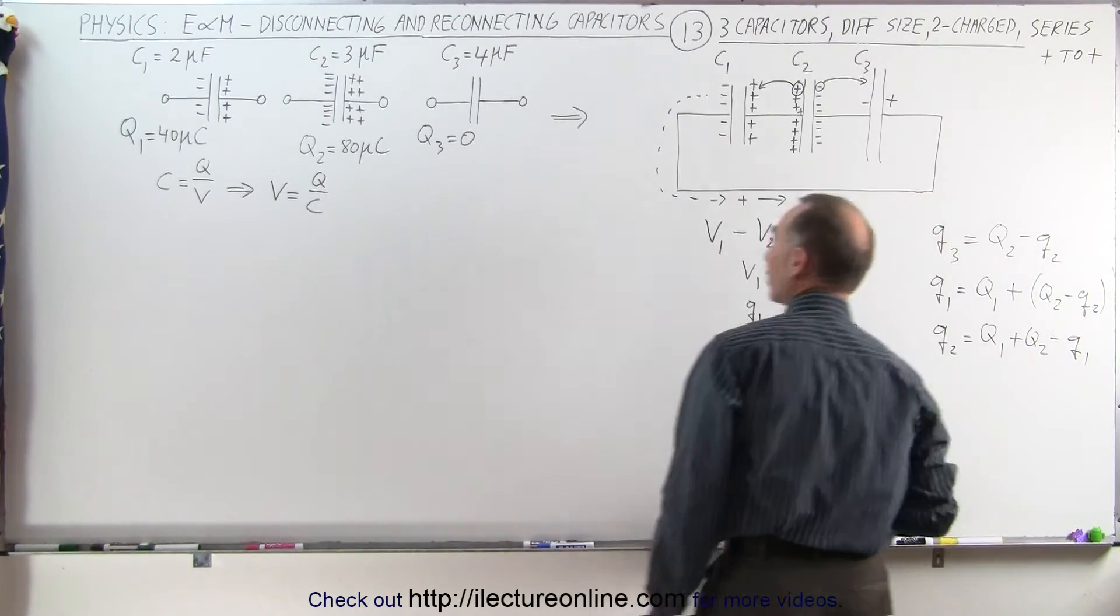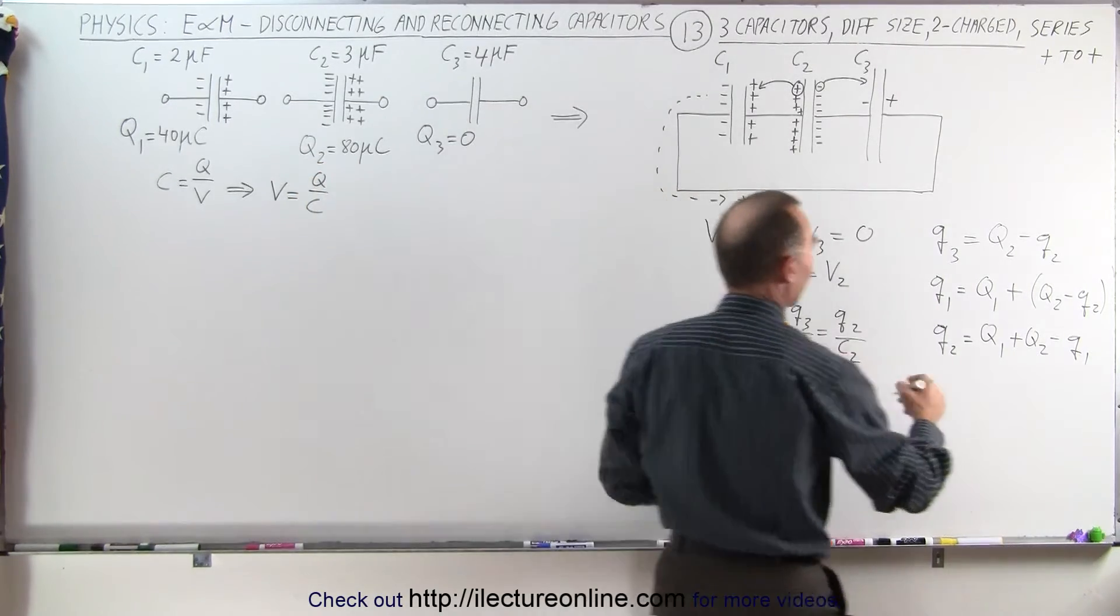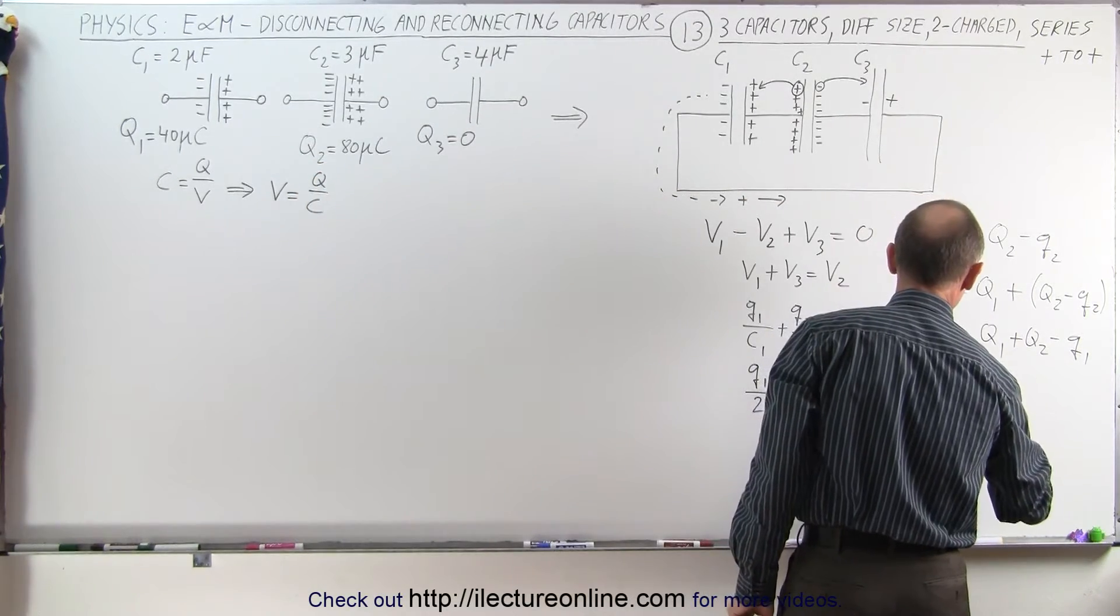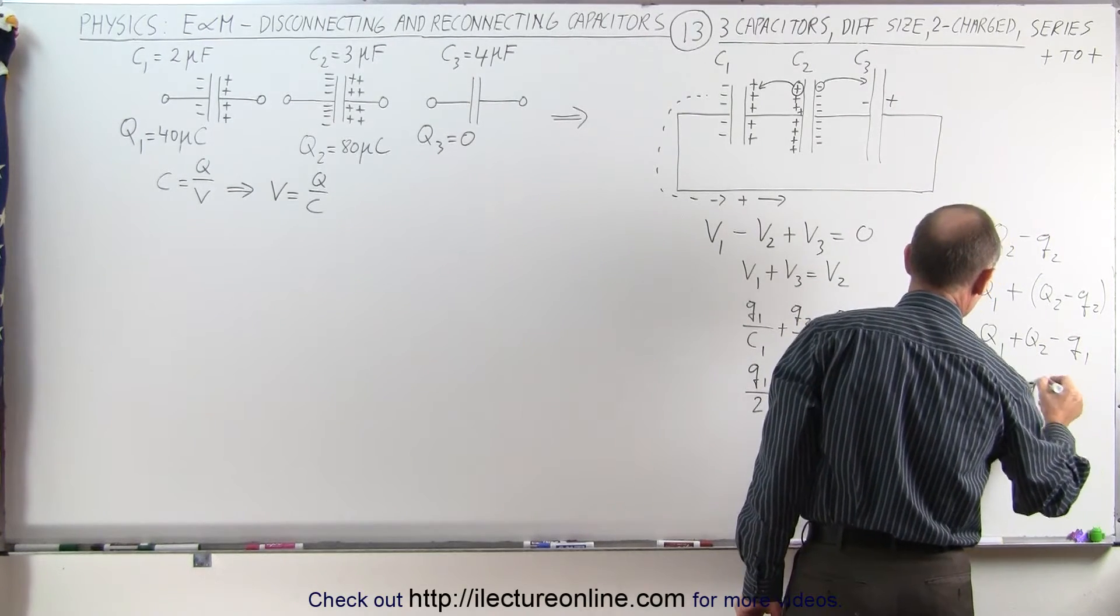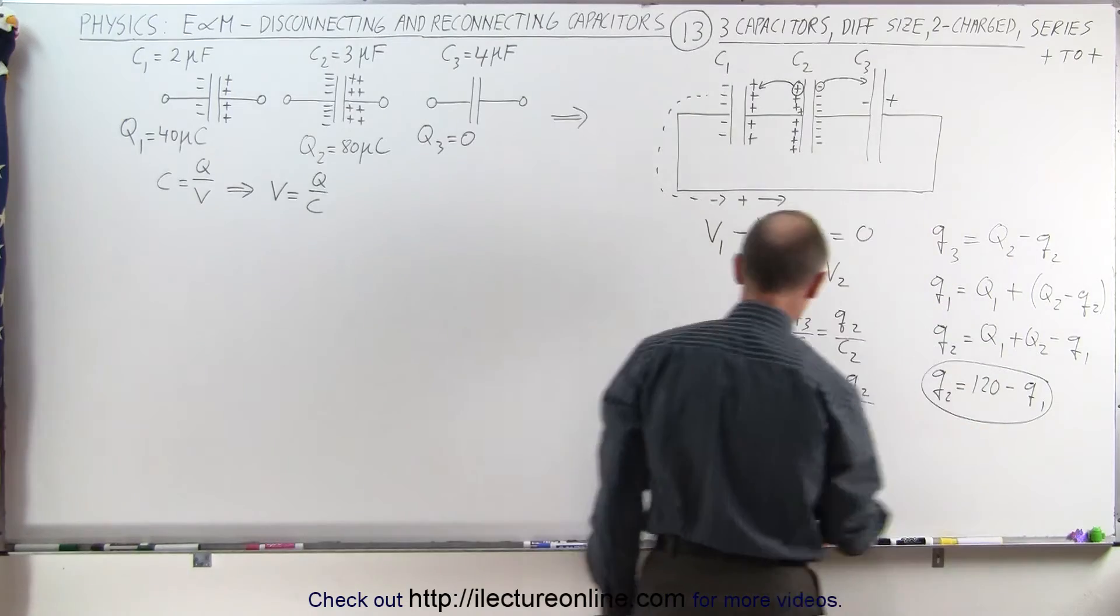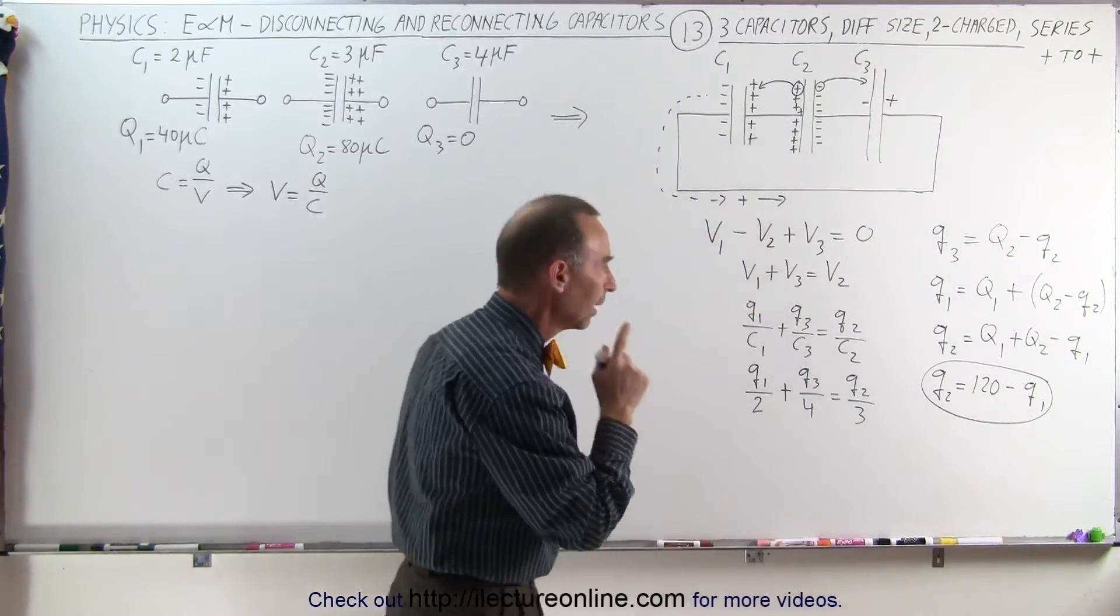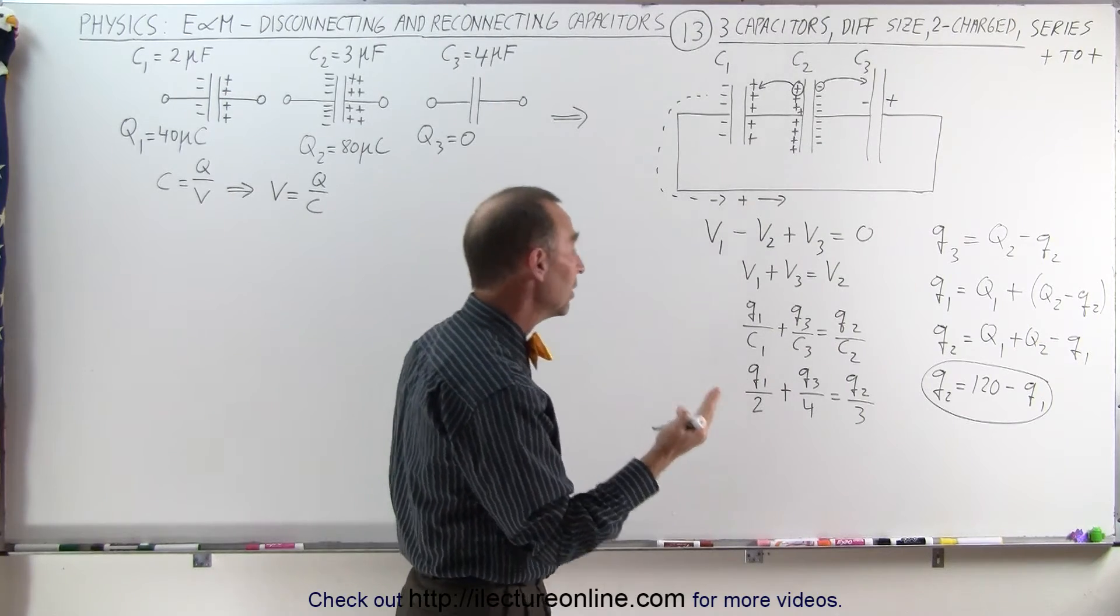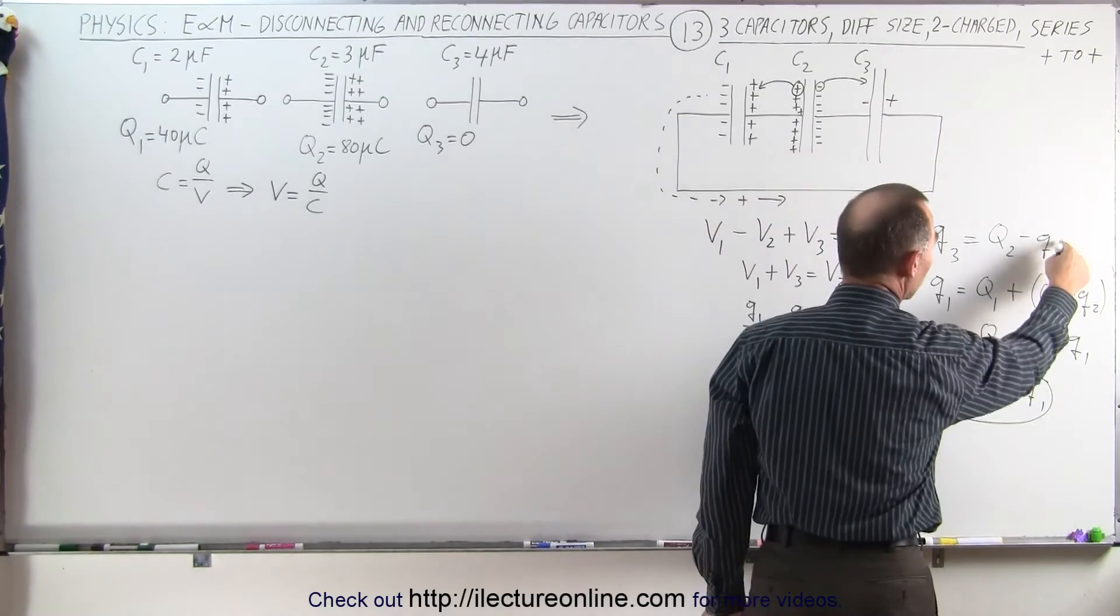So Q2 is equal to 120 minus Q1. All right, so now that allows me to replace this Q2 by this quantity right here. The only thing left to do is we need something for Q3 in terms of Q1. But since we know what Q2 is, we can say that Q3, because what I'm going to do is take this, bring it down here.